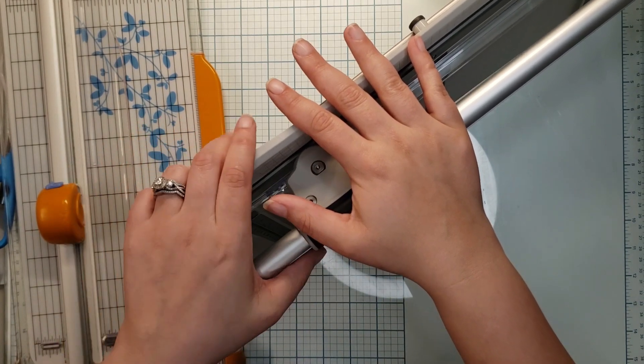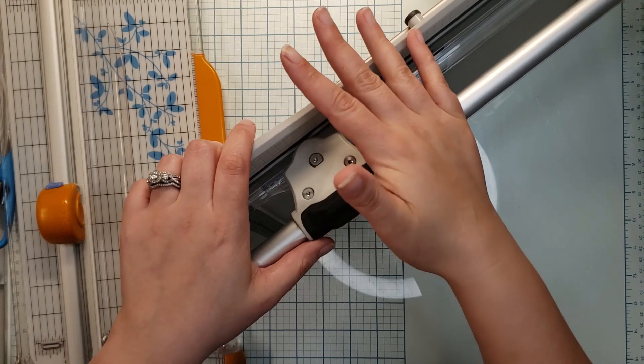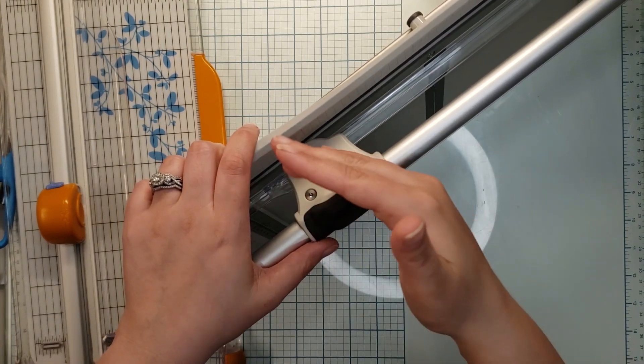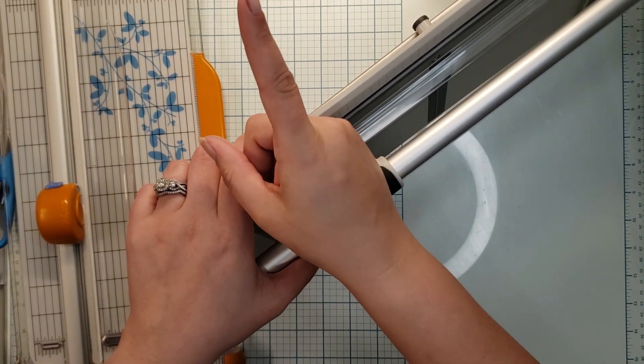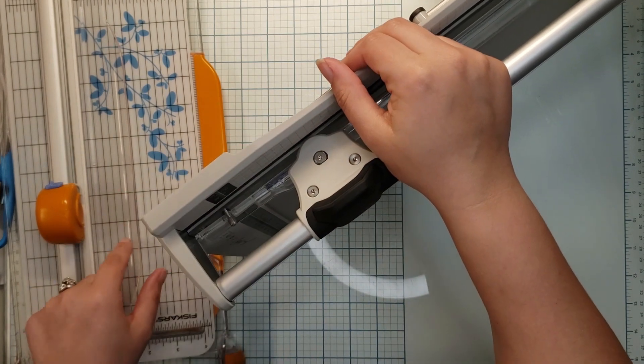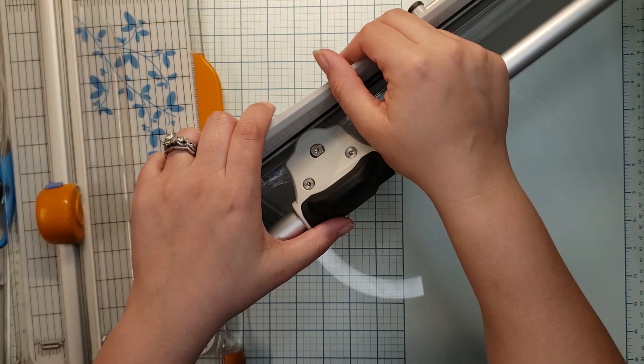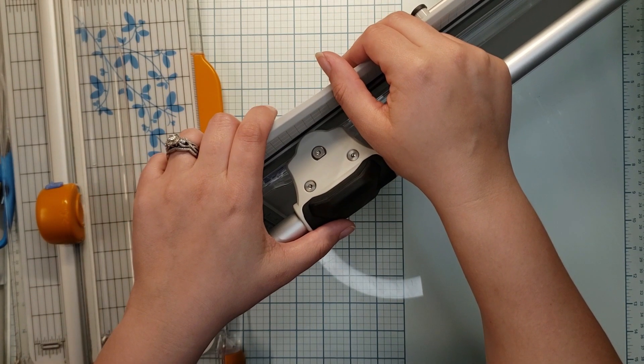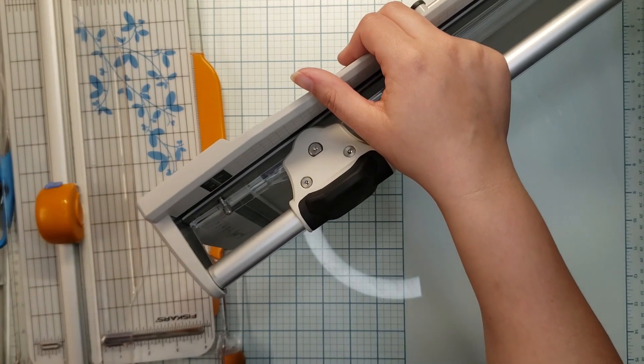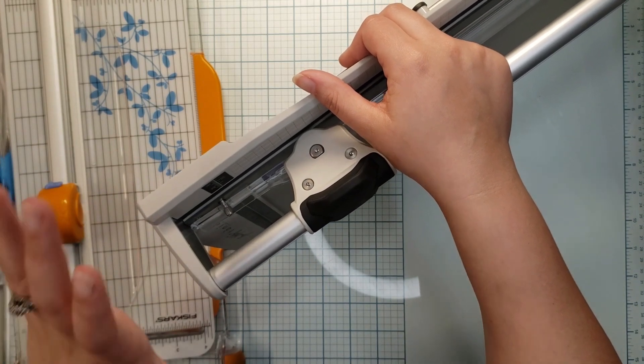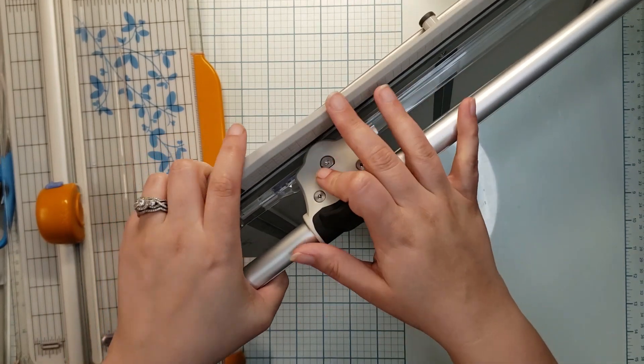But I also scrapbook daily, so I justified the fact that I scrapbook daily and that I'm upset about this trimmer not being square and Fiskars isn't going to change anything about it. It's like a defect with the arm. So I got this one.